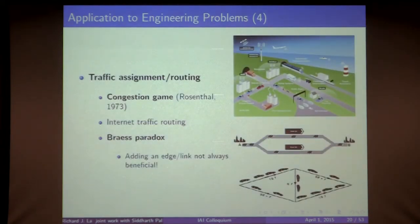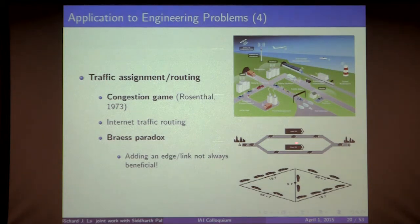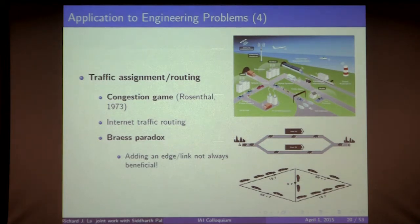The third example is traffic assignment or routing, dating back to the 1970s. Rosenthal studied the congestion game related to traffic assignment. One notable phenomenon is Braess's paradox: if you notice higher congestion on one path and try to alleviate it by adding a new road connecting the top and bottom paths, in some cases adding this extra road actually leads to worse congestion for everybody. This indicates you must be careful when dimensioning a network.